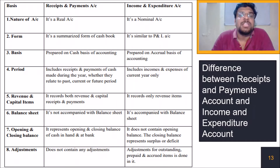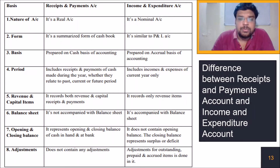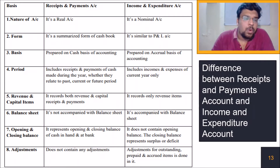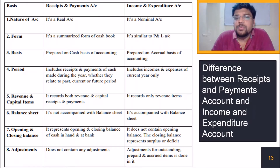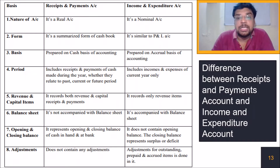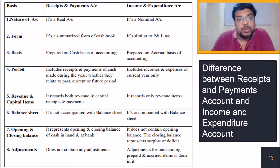In terms of form, the receipt and payment account is a summarized form of the cash book, while the income and expenditure account is similar to profit and loss. In terms of basis, the receipt and payment account is prepared on a cash basis of accounting, and the income and expenditure account is prepared on an accrual basis. The receipt and payment account includes receipts and payments of cash made during the year whether they relate to past, current, or future periods.